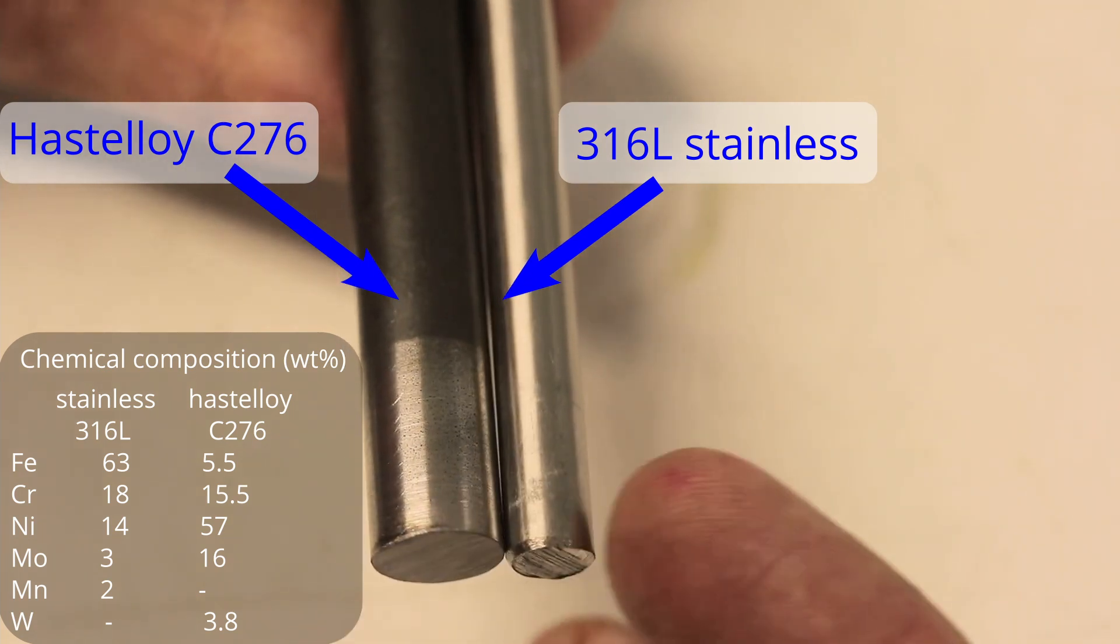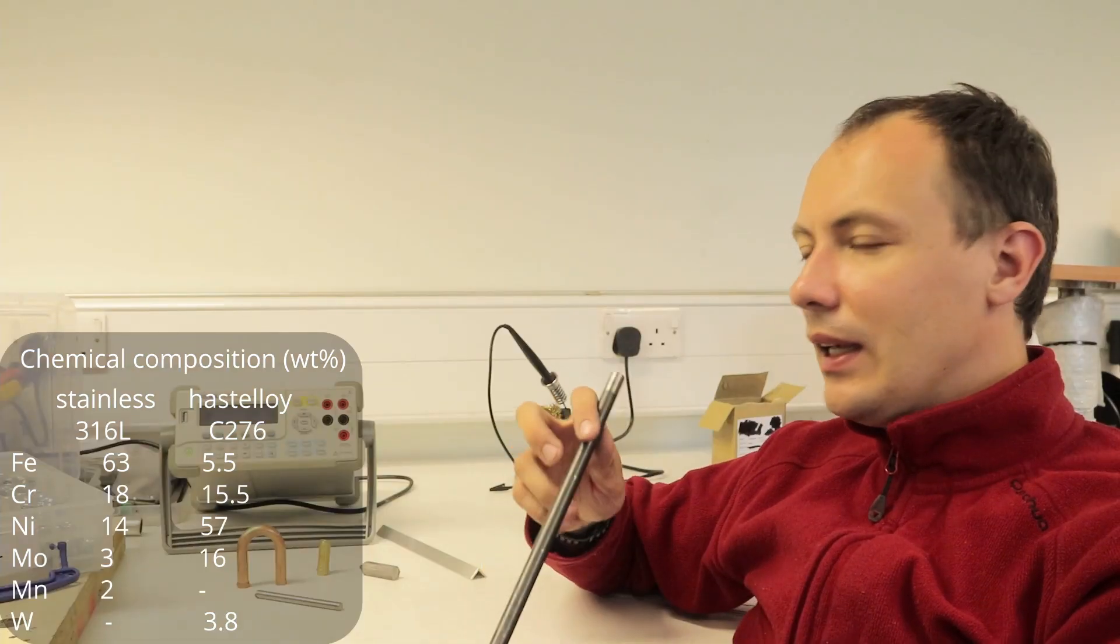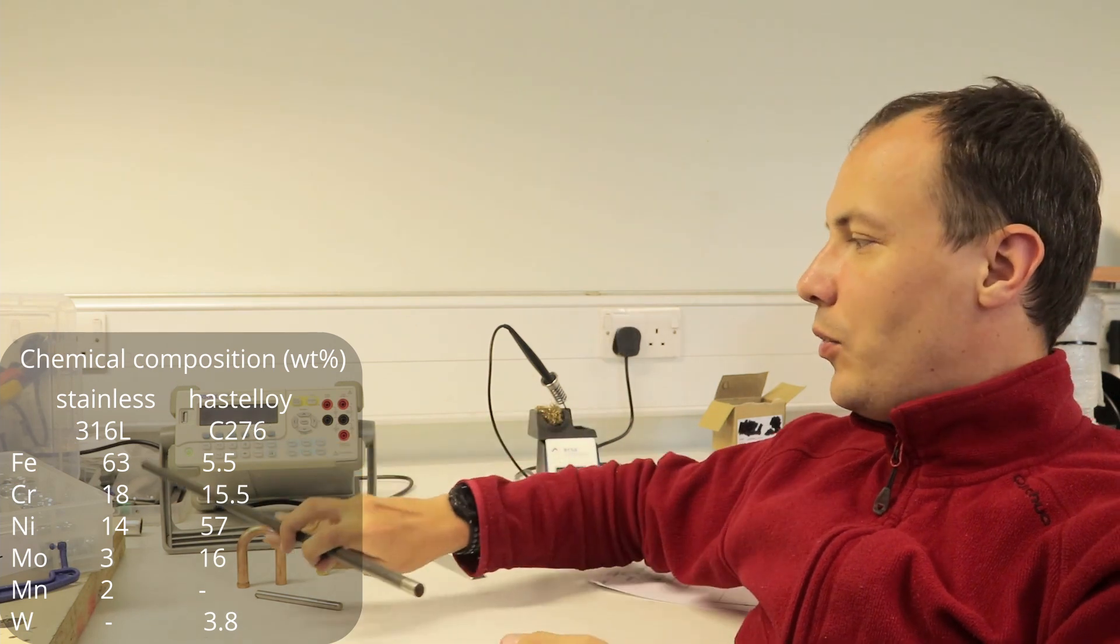That's a bit of hastelloy. You can see it's black when it's oxidized, yet when it's nice and polished, it really does look like just a chunk of stainless steel.